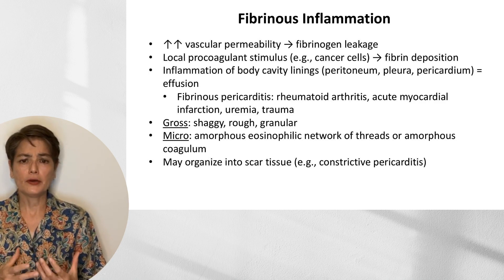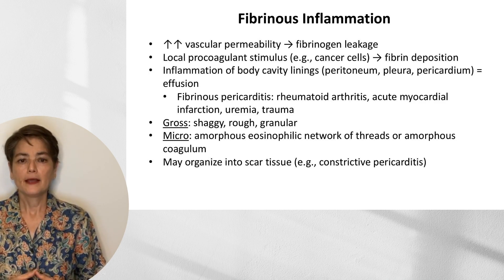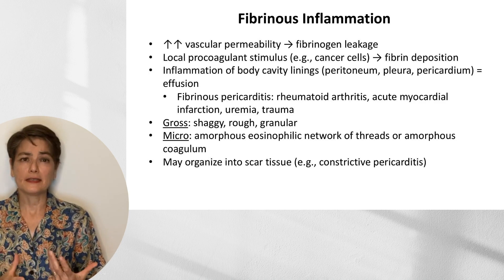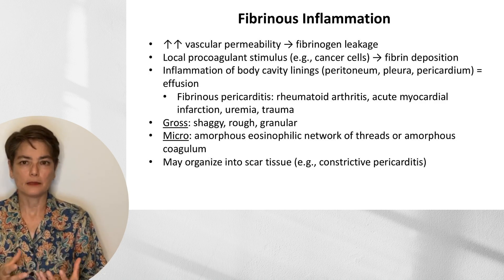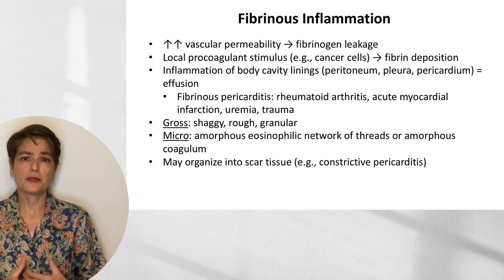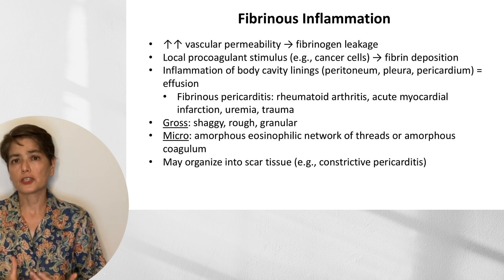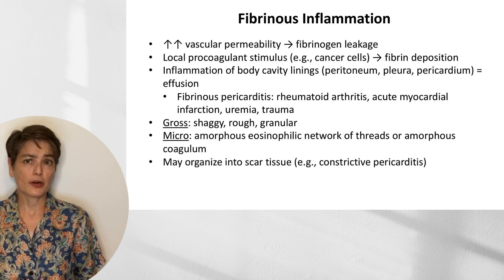Grossly, the appearance will be shaggy, rough, and granular tissue due to protein deposition. Microscopically, we're going to see a network or mesh of eosinophilic threads, or alternatively it can appear as just an amorphous coagulum — a pink blob. Something to keep in mind is that depending on the extent of fibrin deposition, this may undergo scarring as the body tries to resolve the injury, and this can lead to constrictive pericarditis.